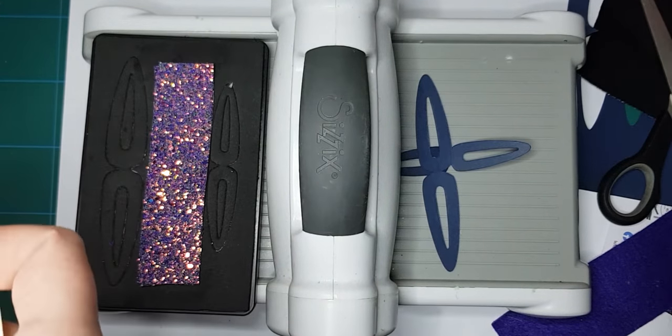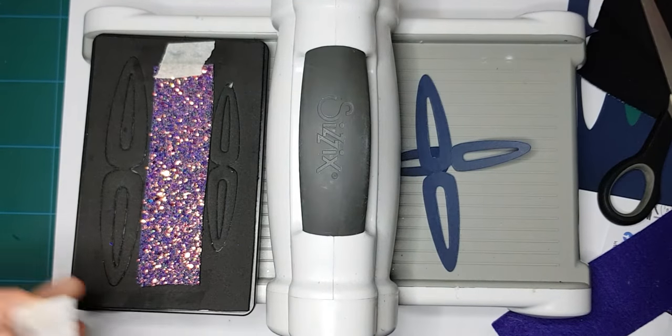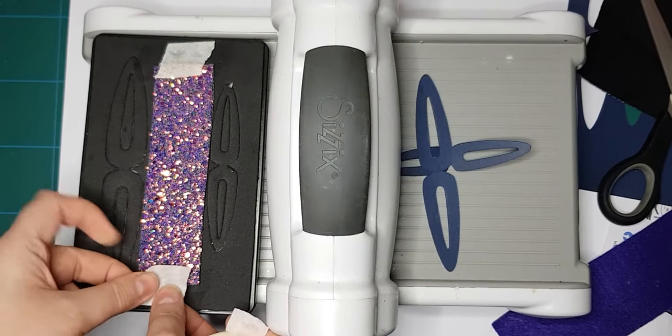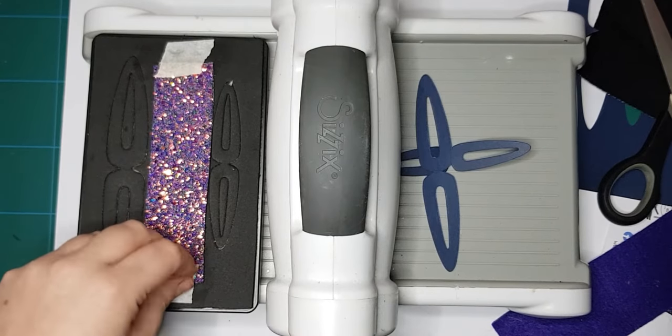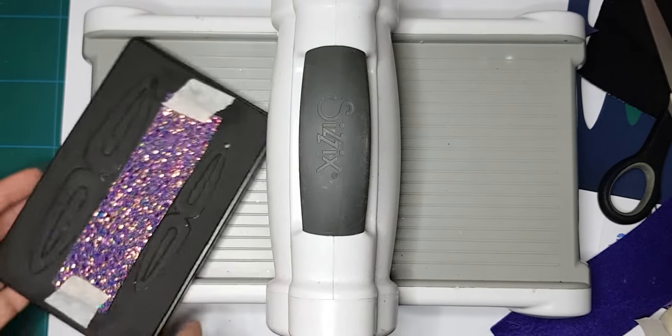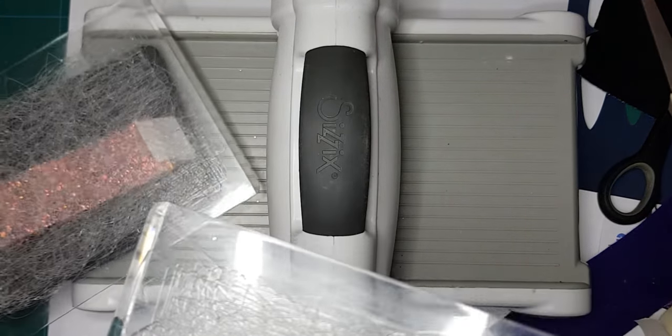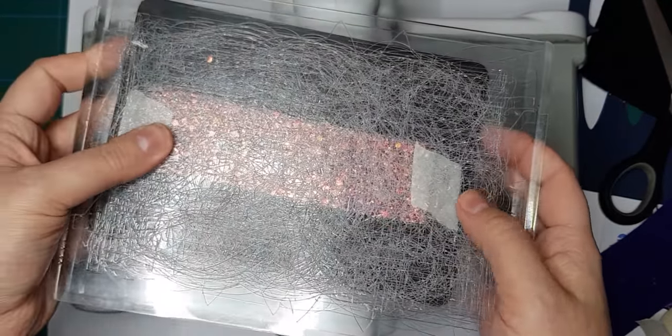And then I've got this masking tape, just standard masking tape. You can get it for about a pound from Wilko's, your crafting stores, places like Hobby Craft. I'm just going to tape down each end. It doesn't affect anything at all, it just keeps it in place and stops it moving.